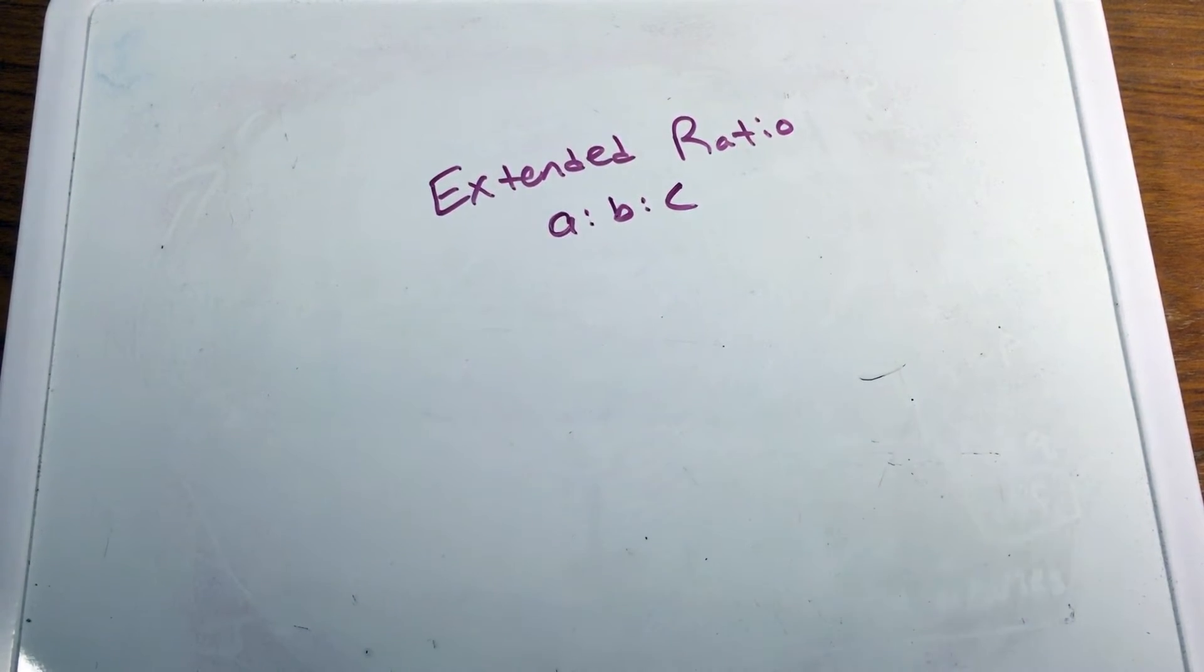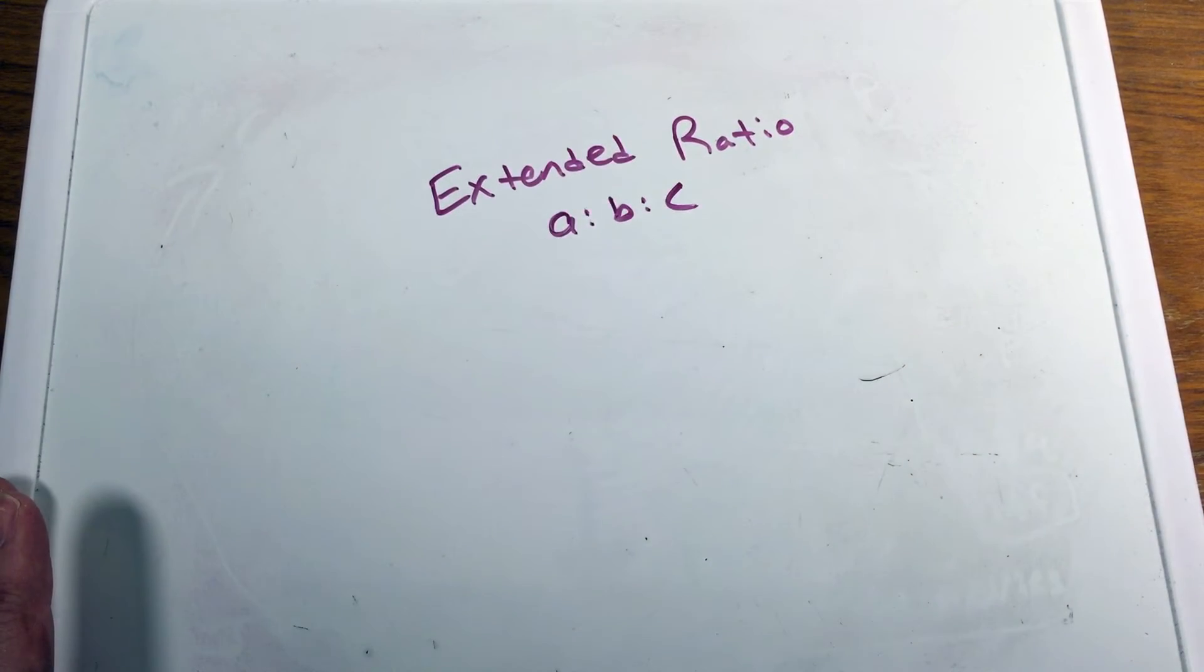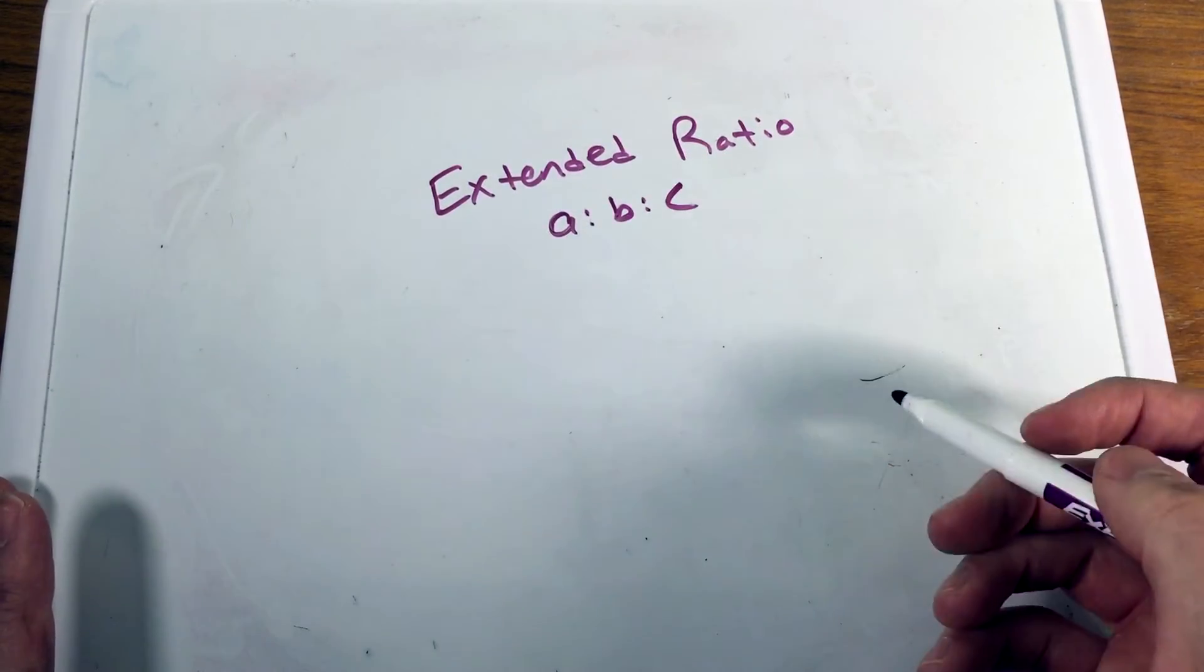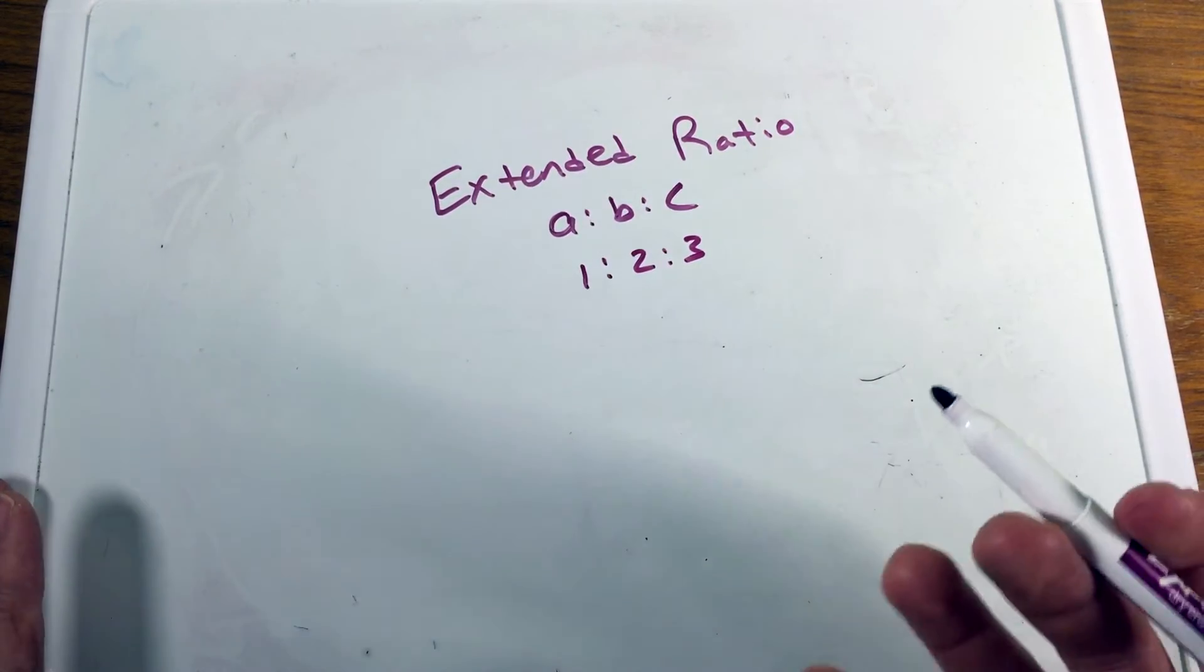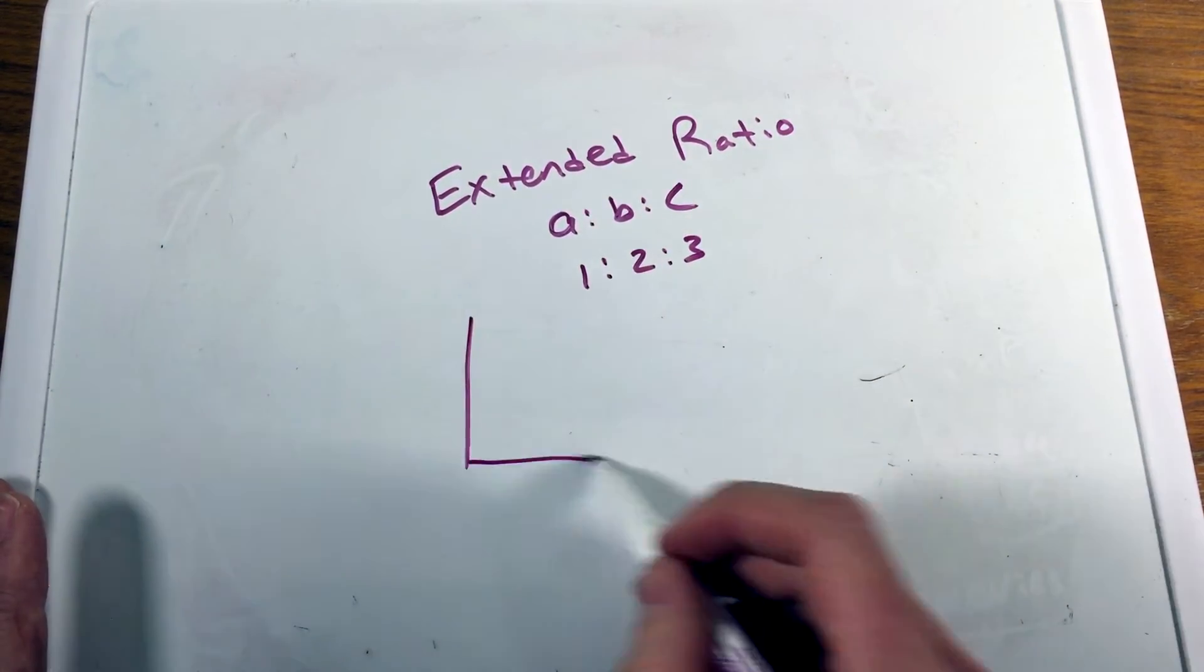A lot of times we'll see it within a triangle that has the extended ratio. So if I say that the extended ratio of a triangle of the interior angles is one to two to three, if I draw a triangle.